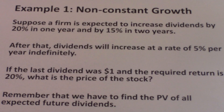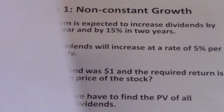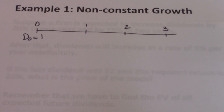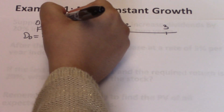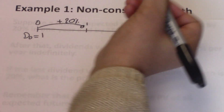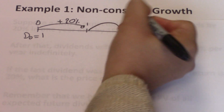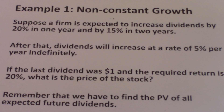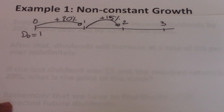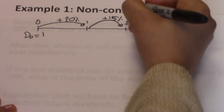The problem tells us that the firm is expected to increase dividends by 20% in one year and 15% in two years. After time 0, the dividend is going to increase by 20%, and then after year 1, it's going to increase by 15%. The problem also tells us that the dividend will increase at a rate of 5% per year indefinitely — that 5% is your G.